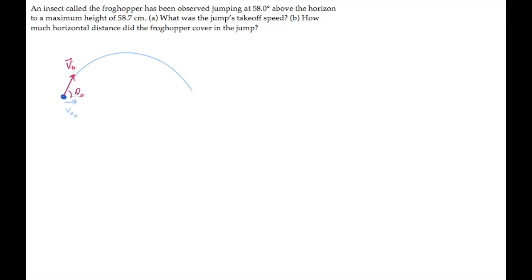The initial velocity components are shown here, v0x and v0y, with their expressions. We're told that the insect's maximum height, I'll call it h, is 0.587 meters.